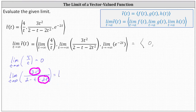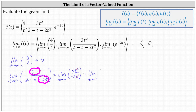The given limit is equal to the limit as t approaches infinity of three t squared divided by negative two t squared, which simplifies — t squared divided by t squared simplifies to one — leaving us with the limit as t approaches infinity of simply negative three halves, which is not affected by t, indicating the limit is equal to negative three halves. This should remind us of the rule that if the degrees are the same, the limit is equal to the ratio of the leading coefficients.